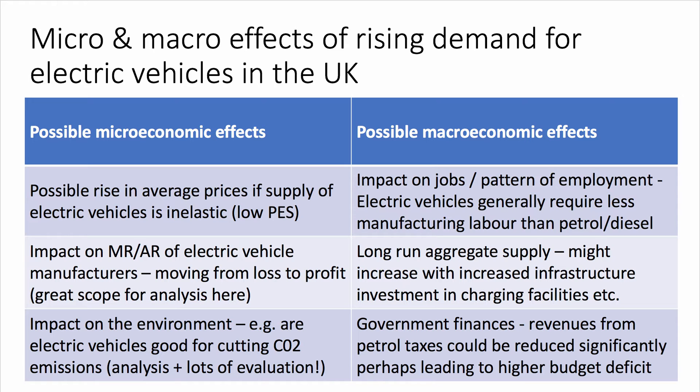You might also go down the theory of the firm pathway: think about the impact on marginal and average revenue of electric vehicle manufacturers. Maybe initially they're making a big loss because of the high fixed costs of developing the vehicles, but they might move from loss to profit if there's an outward shift in their demand and revenue curves. You could show a great analysis diagram there.